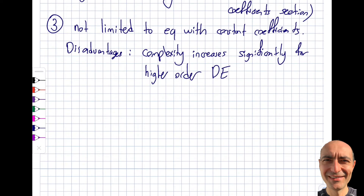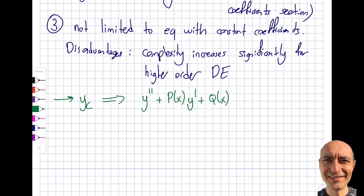Going back to the process: just like before, I'm going to obtain the complementary solution Y_C by solving the homogeneous equation y'' + P(x)y' + Q(x)y = 0. Let's say the solutions are y_1 and y_2. We've exercised this many times. The homogeneous equation is significantly simpler to solve; the goal now is to find the particular solution.